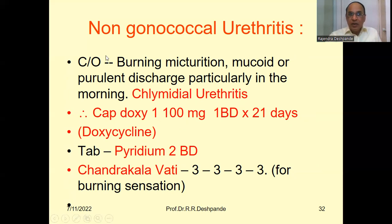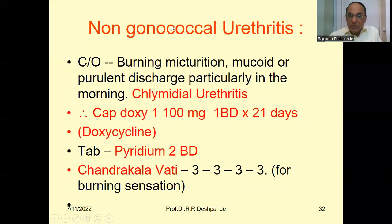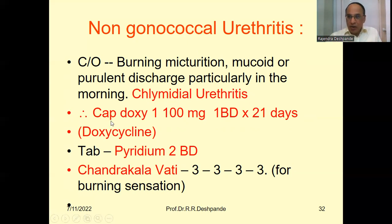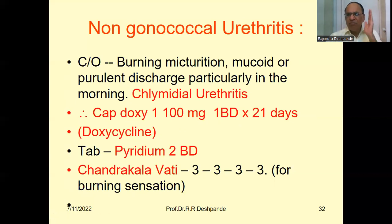There are also cases called non-gonococcal urethritis. Burning micturition will be there, with mucoid or purulent discharge, particularly in the morning only. But sometimes this discharge is very, very less — only burning micturition. This non-gonococcal urethritis is because of a chlamydial infection. The treatment for chlamydial infection is totally different — there is no Norflox. You have to give tablet or capsule doxycycline. The brand name is Doxy, 100 mg, one morning and one evening for three weeks. This is very important. Doxy capsule should be given for a minimum of three weeks, and it can be extended up to one and a half months.